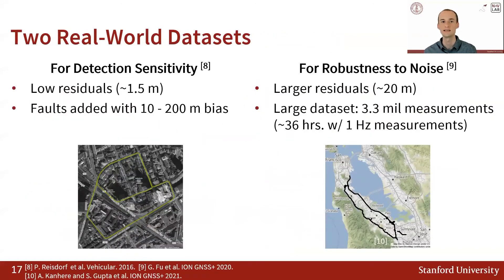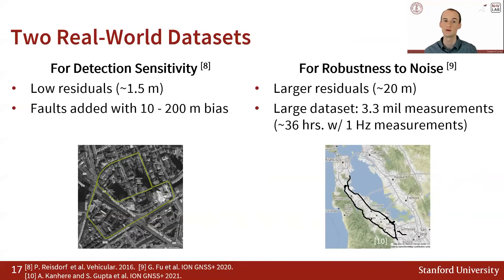We compare EDM-based FDE with residual-based and solution separation FDE using two real-world datasets. The first dataset on the left is relatively clean with low residuals. We then added our own fault biases to measurements from 10 to 200 meters to determine each FDE method's detection sensitivity relative to the bias magnitude. The second real-world dataset on the right was recorded on Android phones and is a much larger dataset with larger residuals.